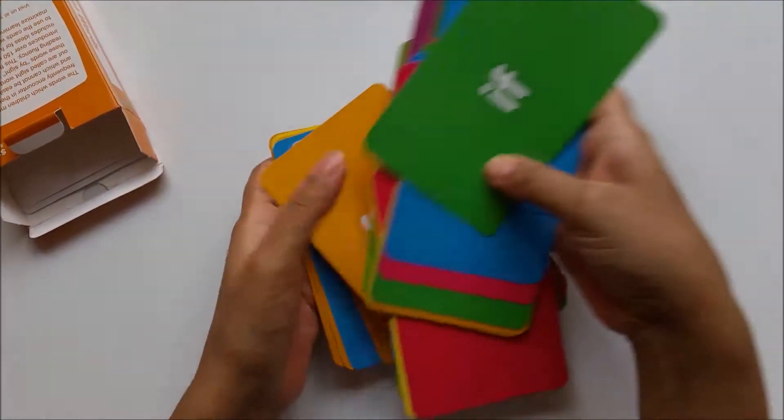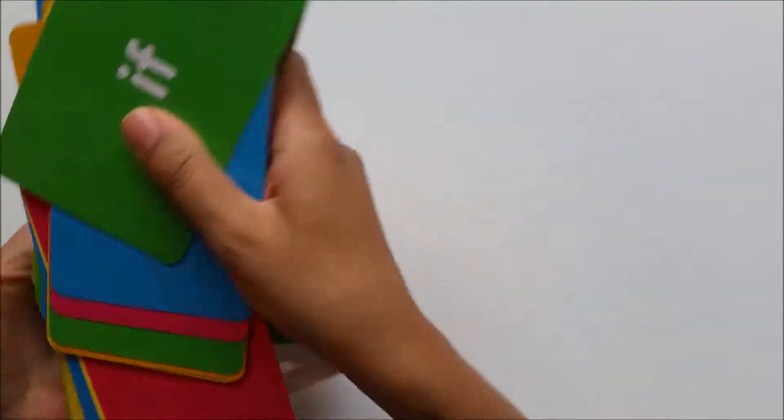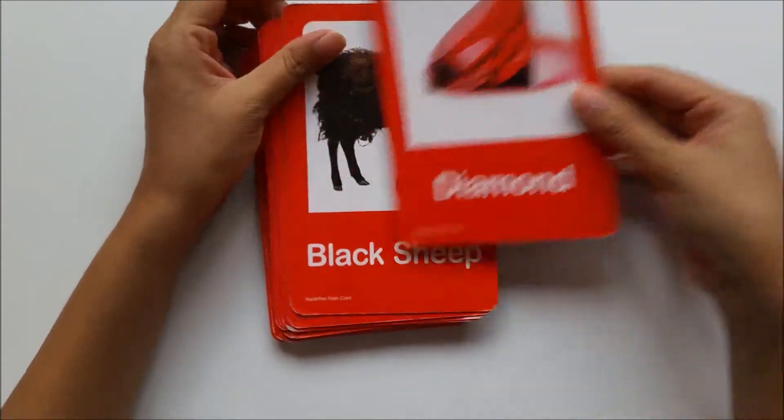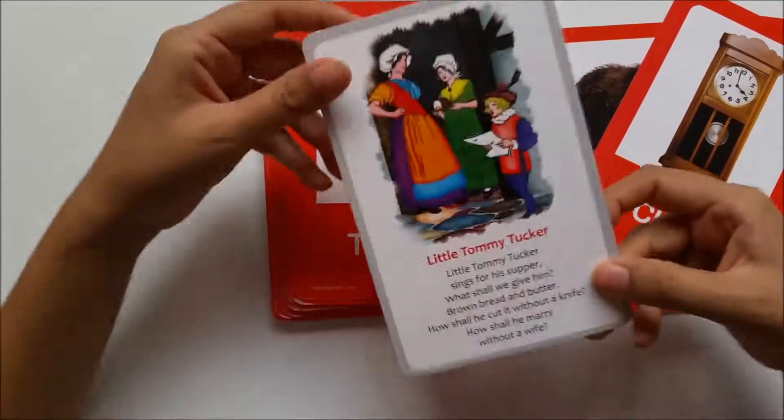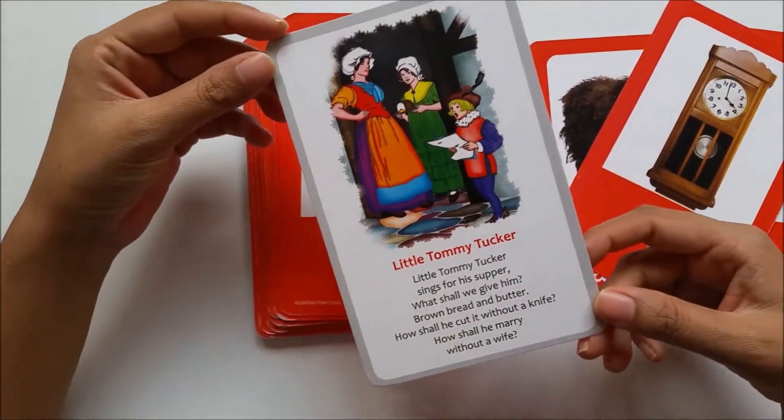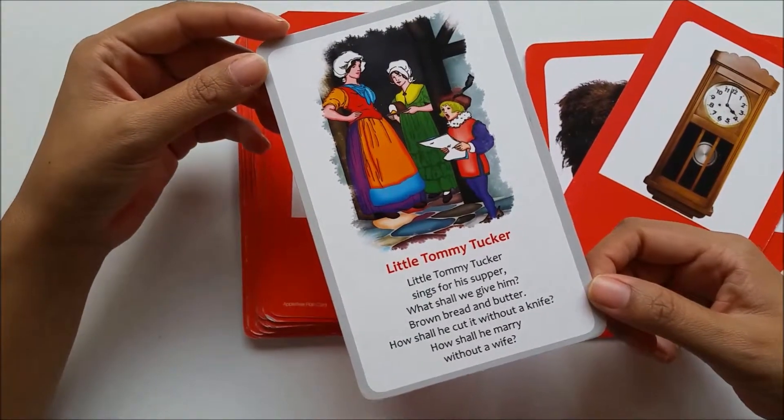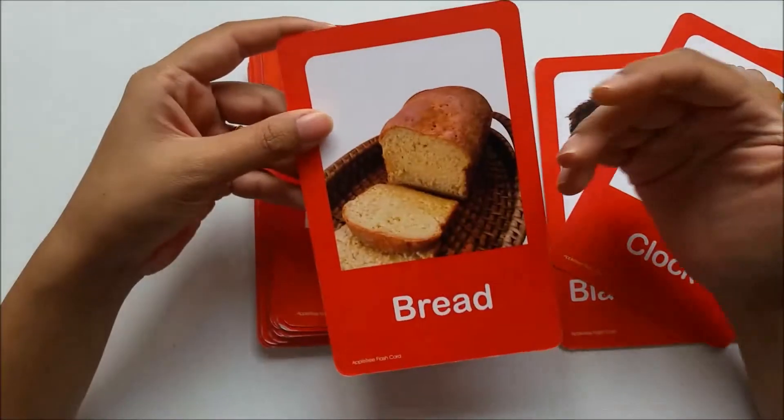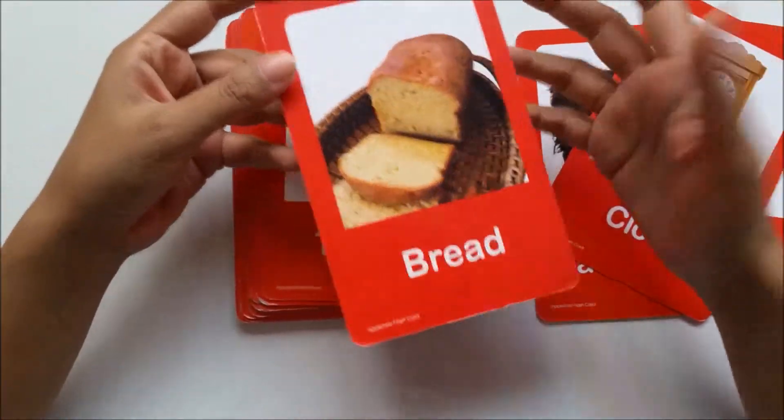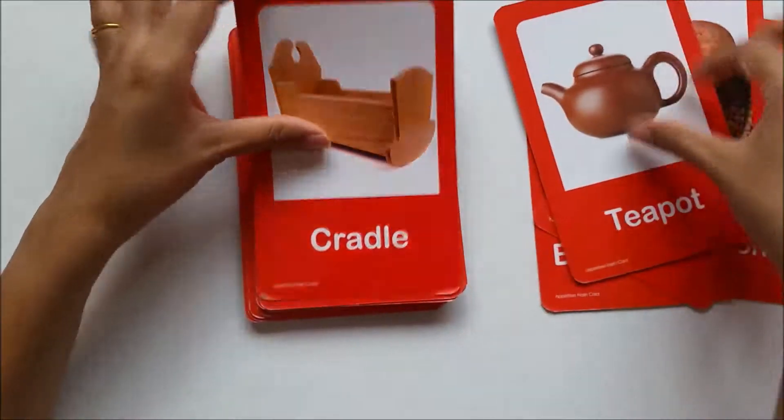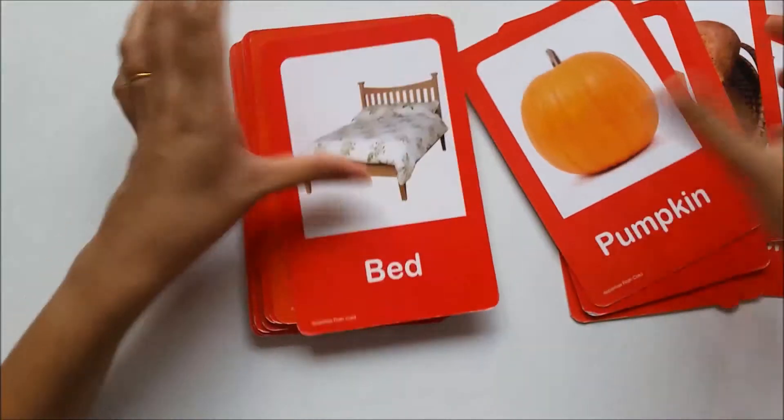Since we are talking about flashcards, let me show you another set which is quite interesting. It is the nursery rhymes flashcards. These flashcards consist of a picture on top and the nursery rhyme behind. So usually my kids and me, we play a game like they check out the picture and then they sing the rhyme. It's fun. I just wanted to tell you about these flashcards.